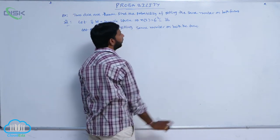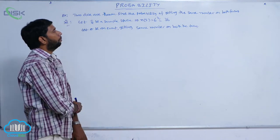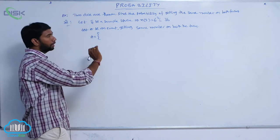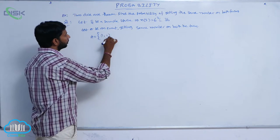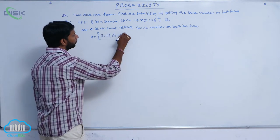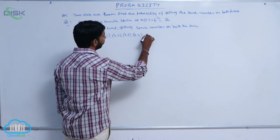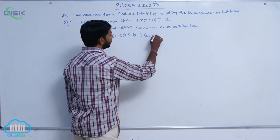A is an event of getting the same number on both faces. That is, A equals (1,1), (2,2), (3,3), (4,4), (5,5), and (6,6). Here two numbers are identical.